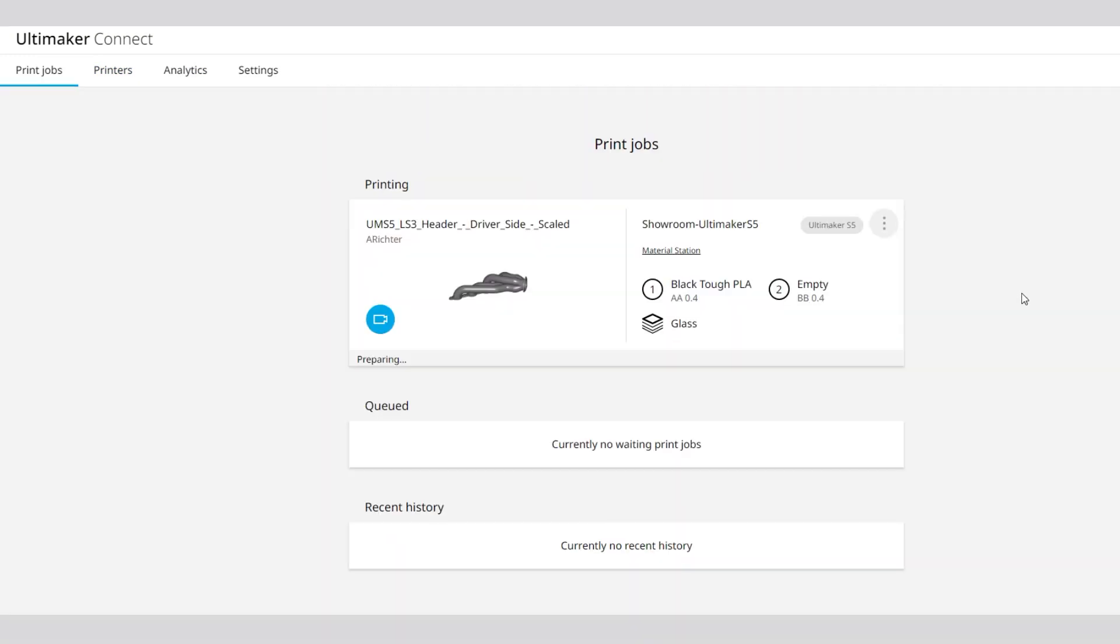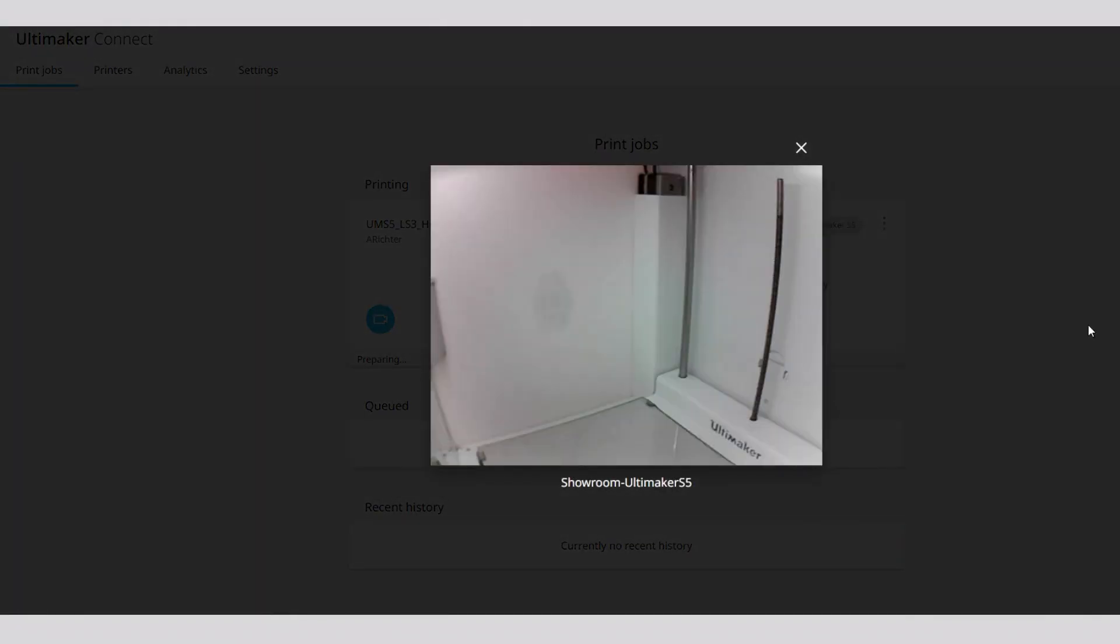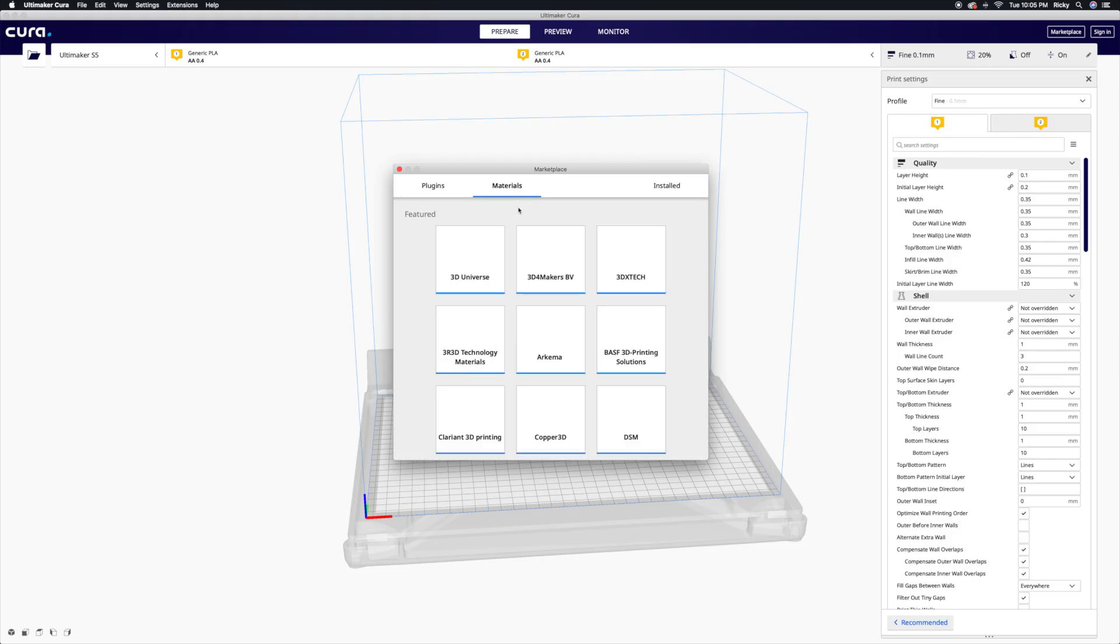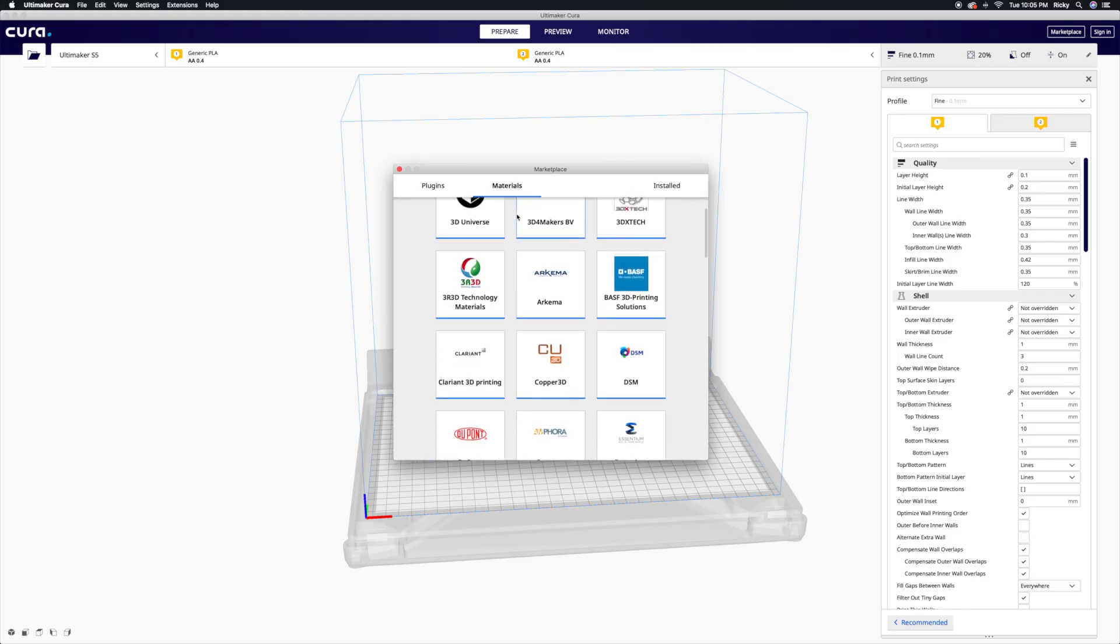To take things one step further, Ultimaker Cloud can be used to start and monitor print jobs from anywhere, create and manage teams and printers, back up custom profiles to the cloud, and use the Ultimaker Marketplace to download material profiles for filament from the most trusted brands out there.